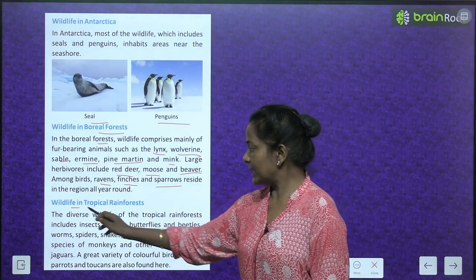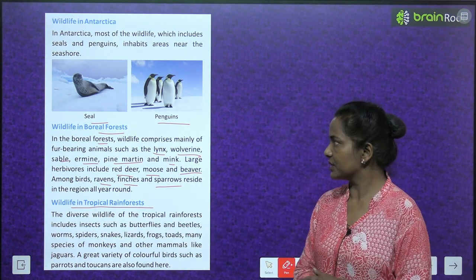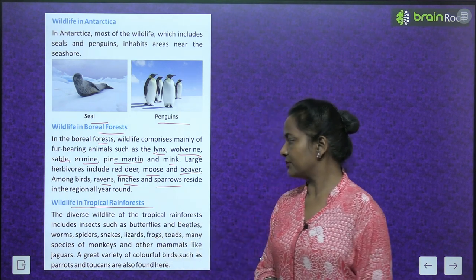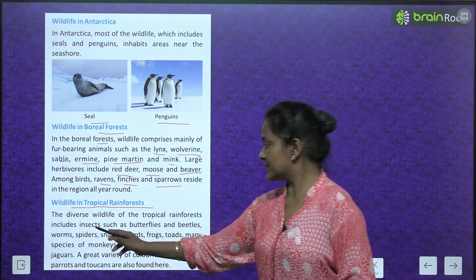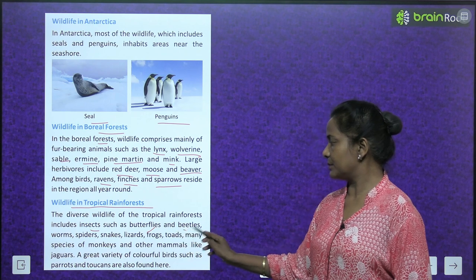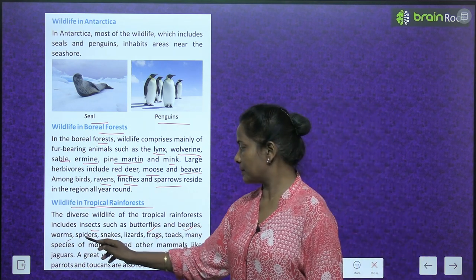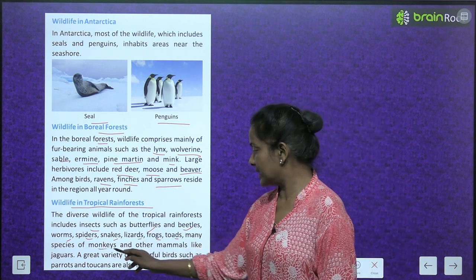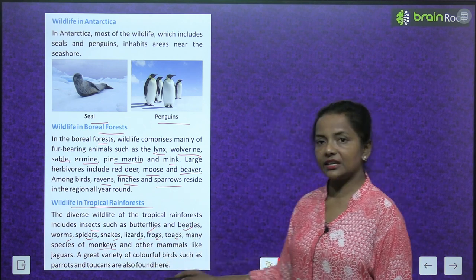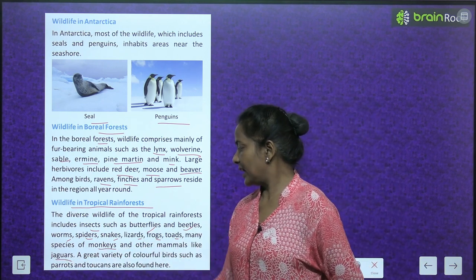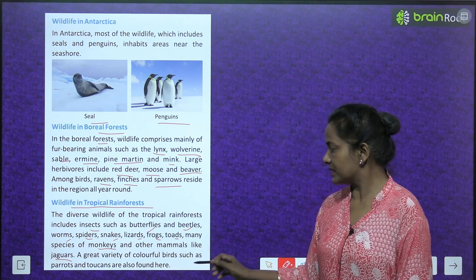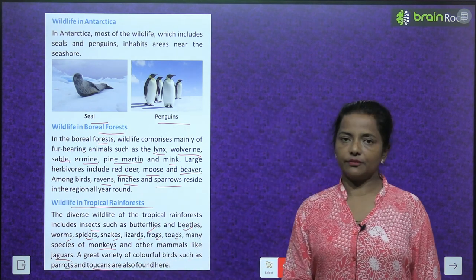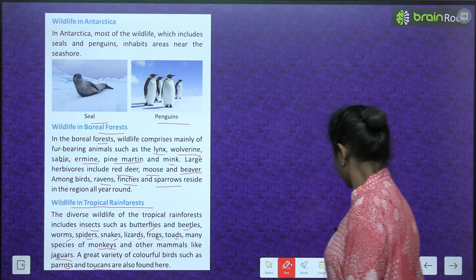Wildlife in the tropical rainforest includes insects such as butterflies and beetles, worms, spiders, snakes, lizards, frogs, toads, many species of monkeys, and other mammals like jaguars. A great variety of colourful birds such as parrots and toucans are also found here.